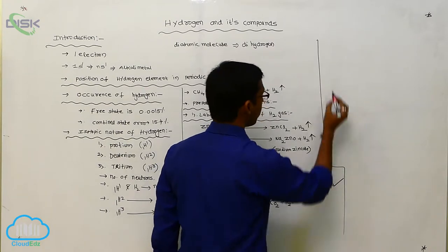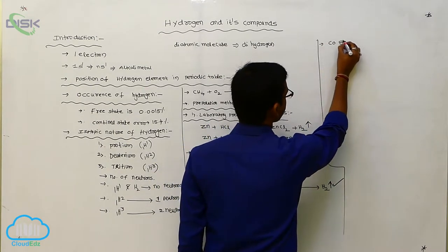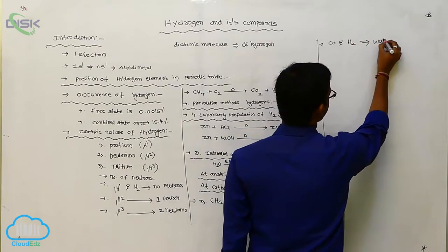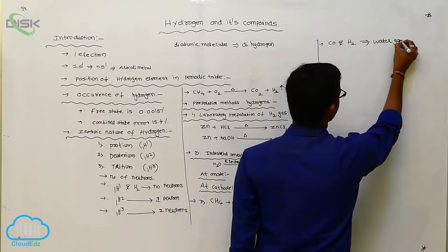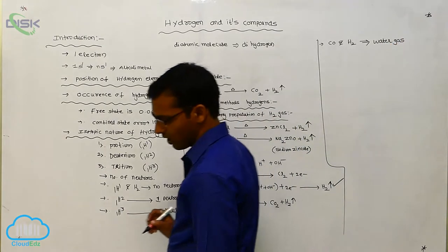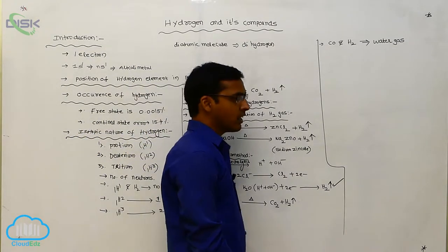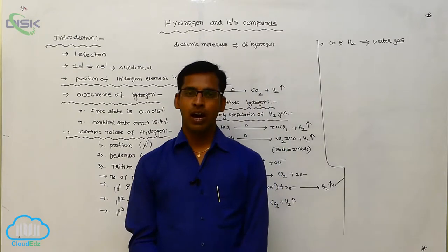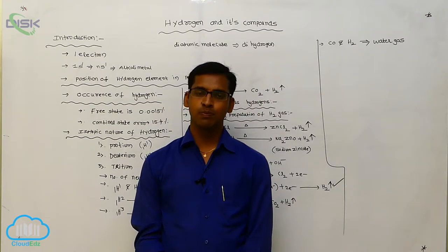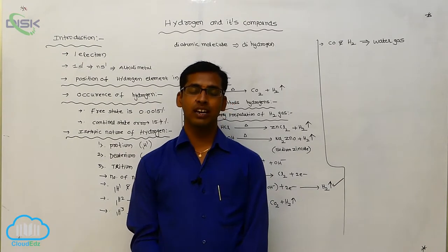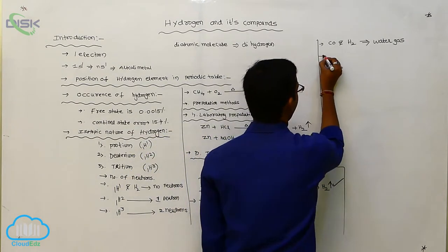Methane gas reacts with oxygen and liberates carbon dioxide along with hydrogen gas. The mixture of carbon monoxide and hydrogen is called water gas, which is used to prepare organic materials like methanol.